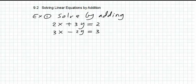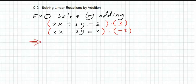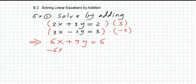So let us multiply the first equation by three and multiply the second equation by minus two. This will result in: the first equation becomes 6x plus 9y equals 6. The second equation will be minus 6x plus 4y equals minus 6.